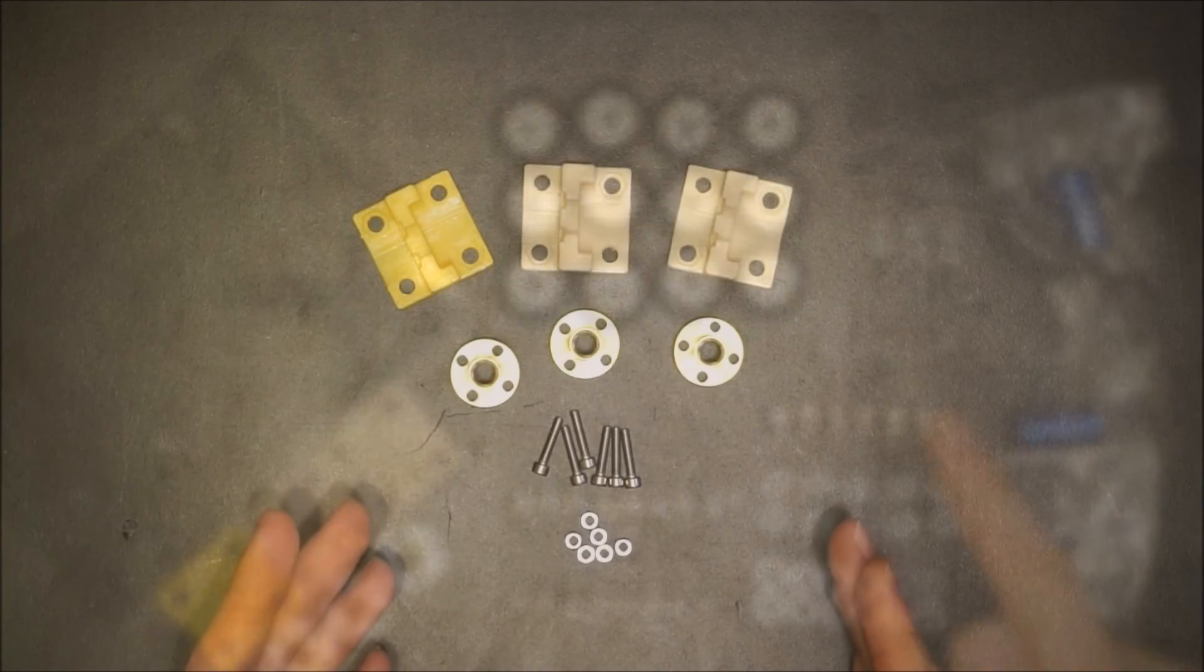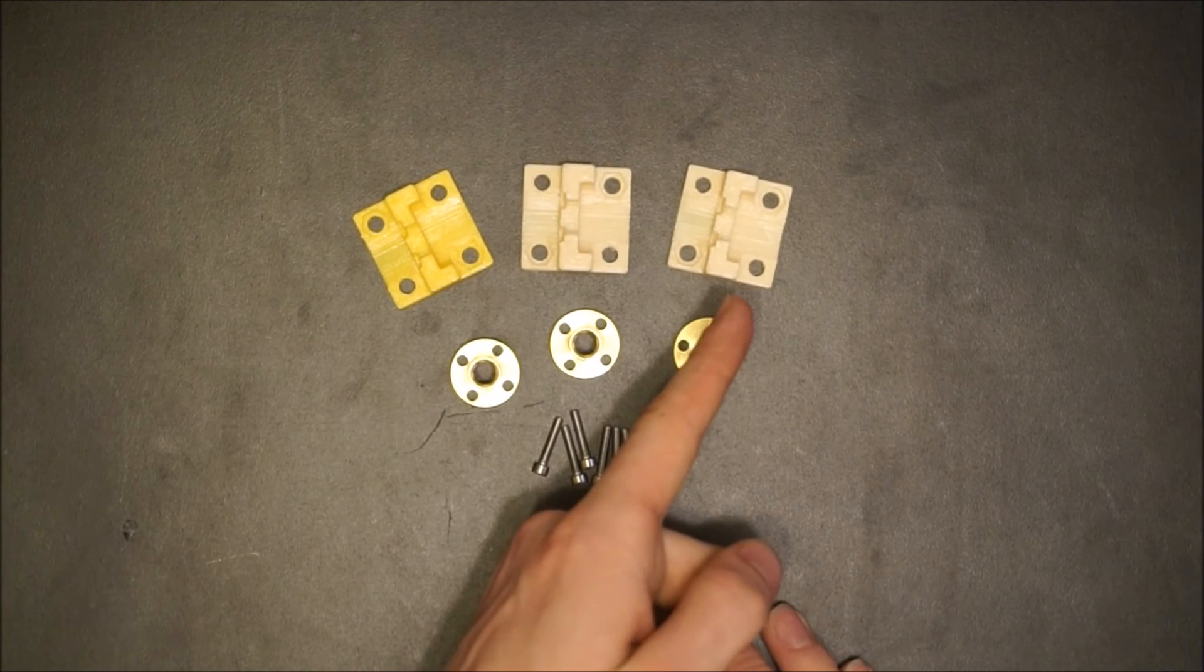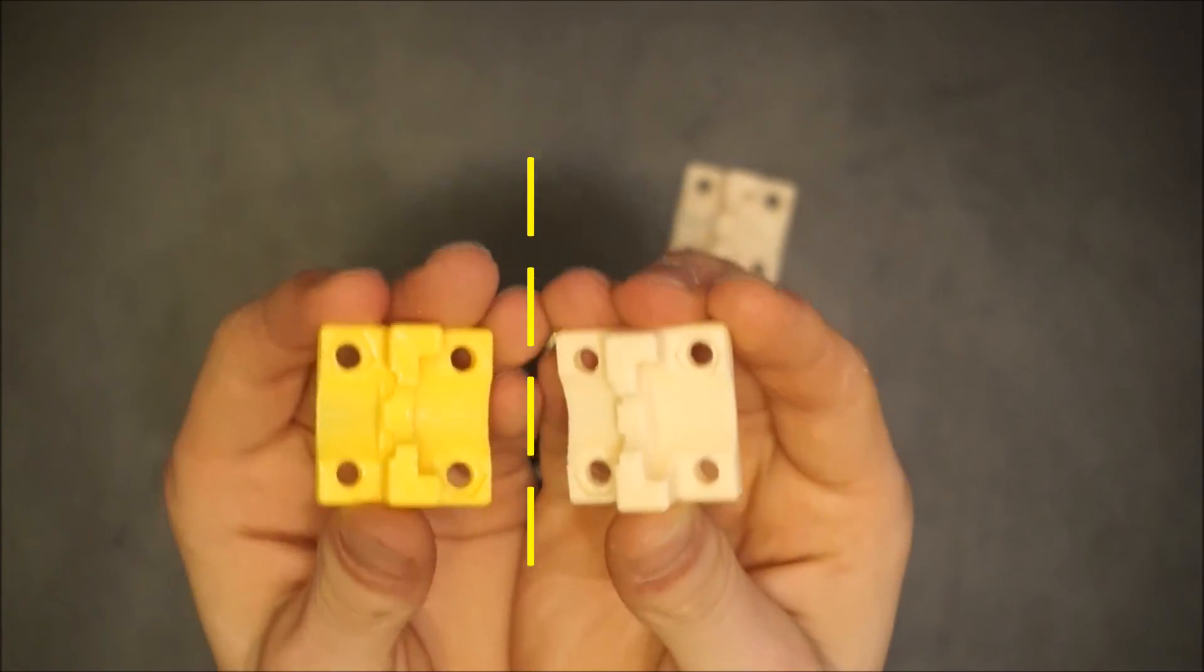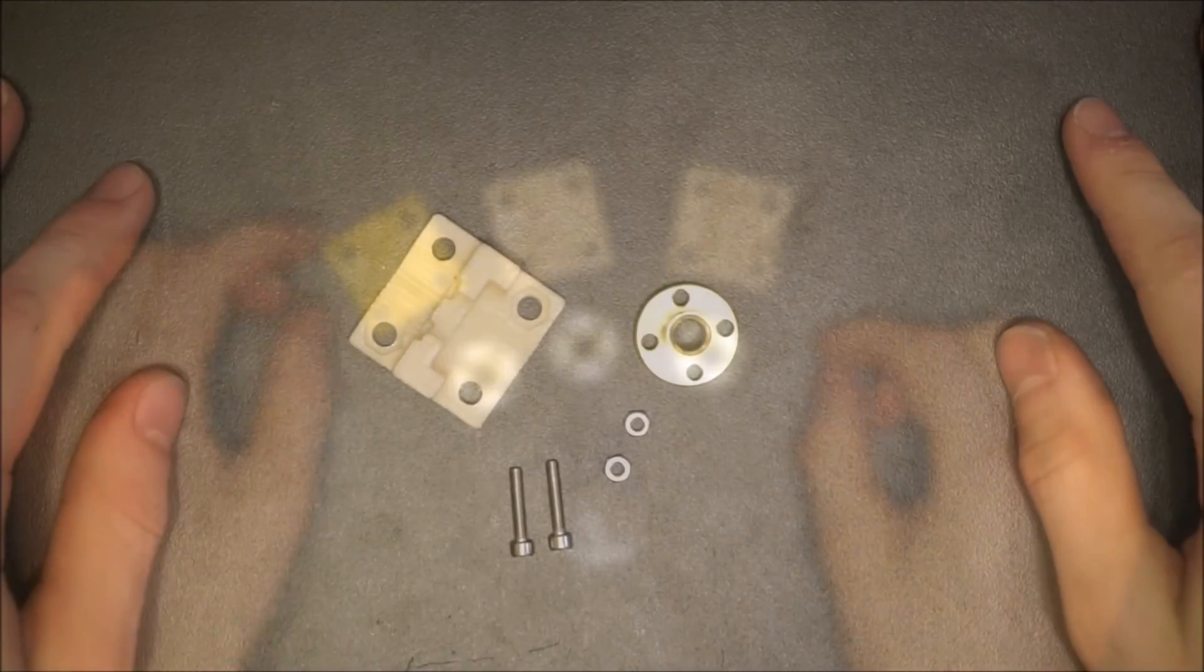Start off by assembling the lead screw nut mounts. You'll notice that two of your nut mounts are the same color and one is different. This is because one of them is a mirror of the other two. Despite this, assembling either mount is the same.